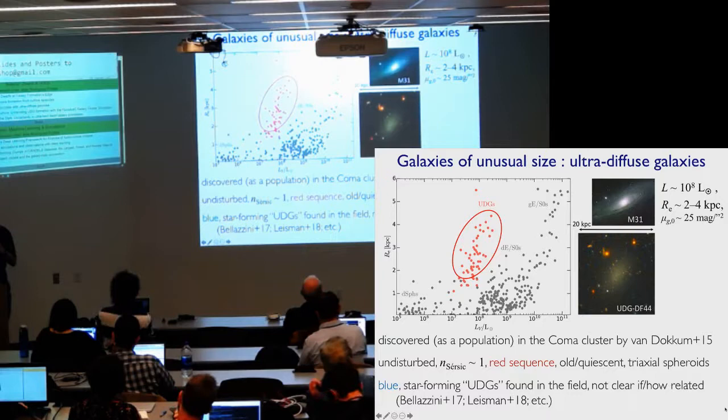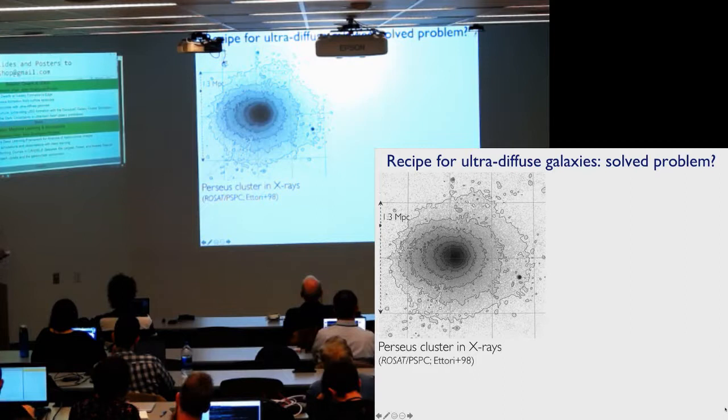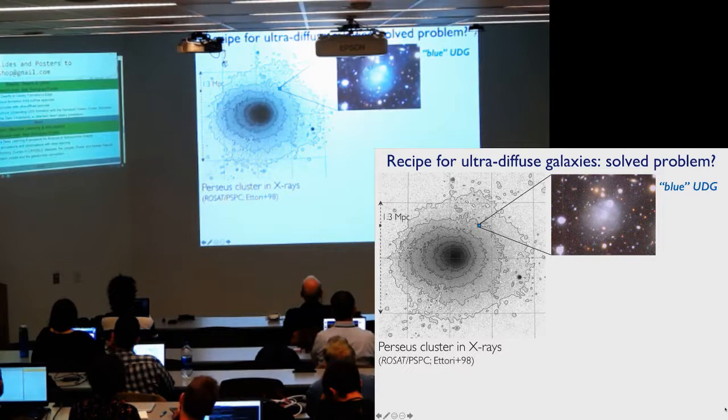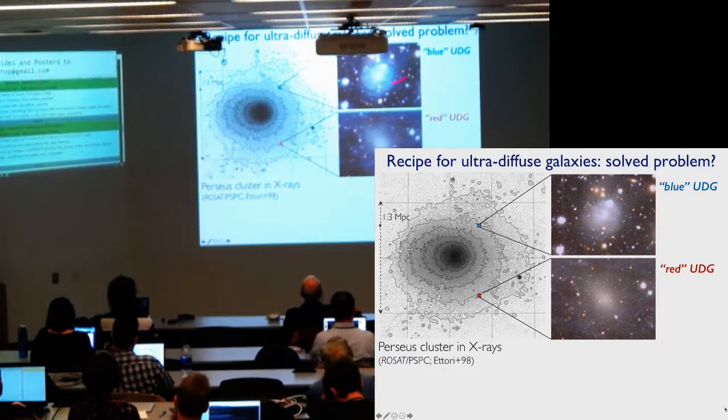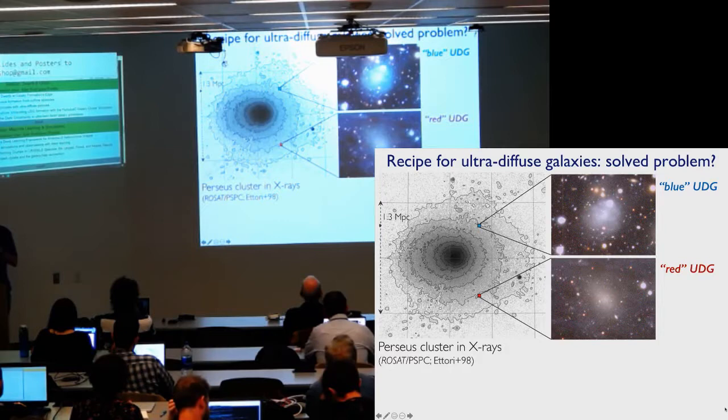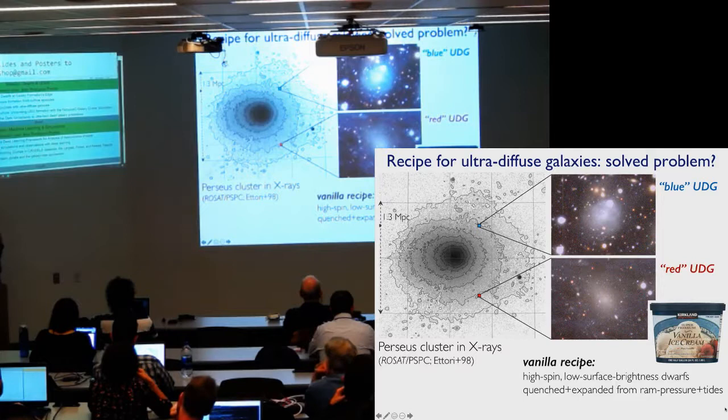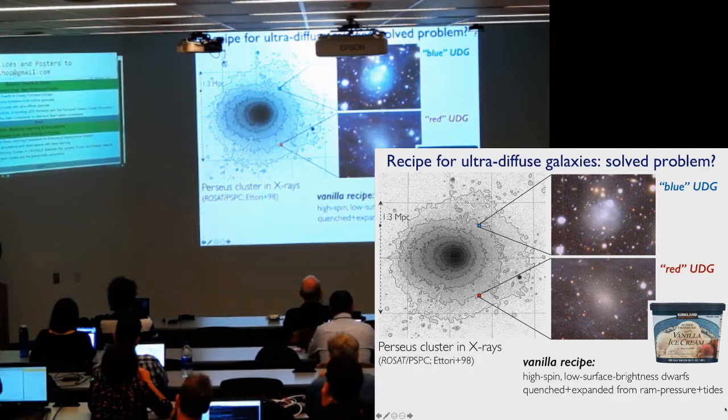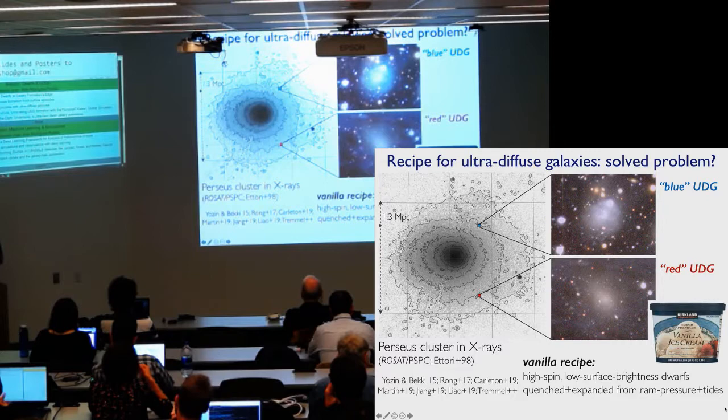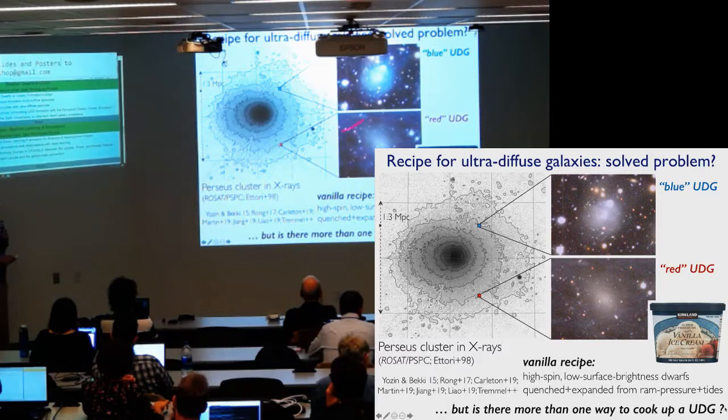So as we'll continue to hear today, there are ways to make low surface brightness dwarfs like UDGs. So the question is, is this now a solved problem? And one basic way you can think of making these is you start off with a massive galaxy cluster with a really thick ISM. You drop something in with gas and it gets tidally stripped and ram pressure stripped, and you get something that's a low surface brightness star-forming dwarf that becomes a low surface brightness quenched dwarf. Okay, end of story. I'll call this the vanilla recipe.